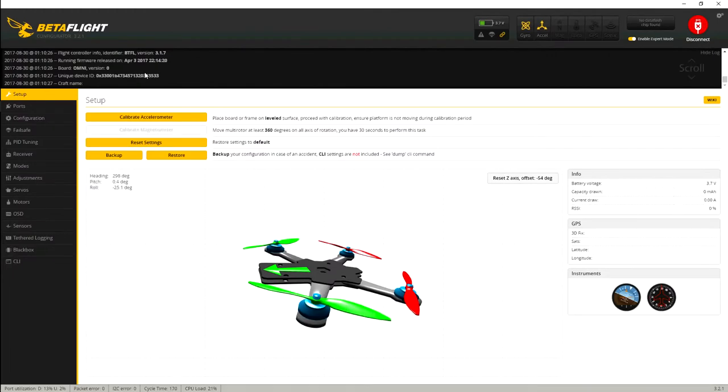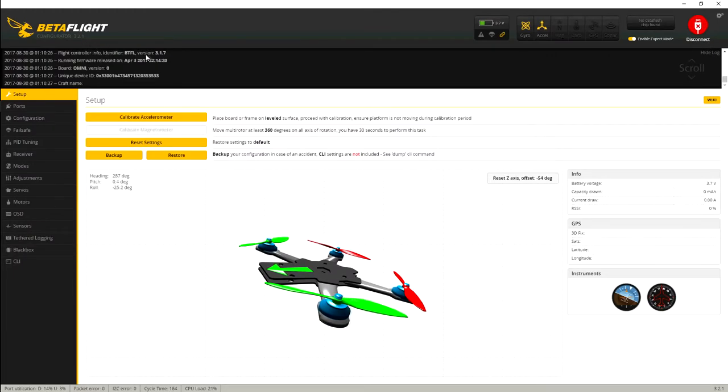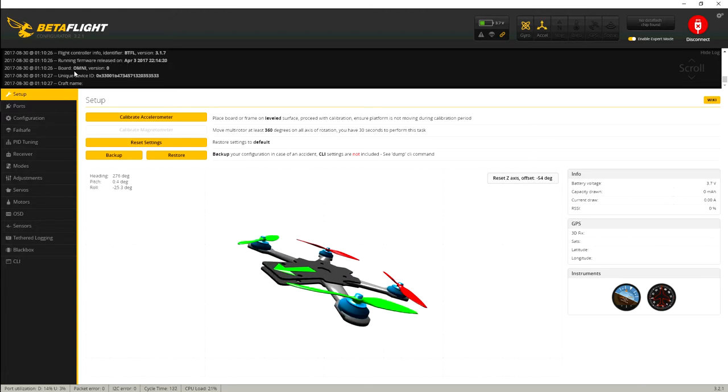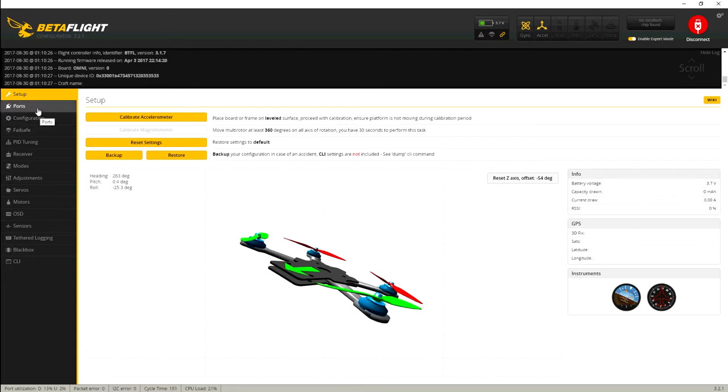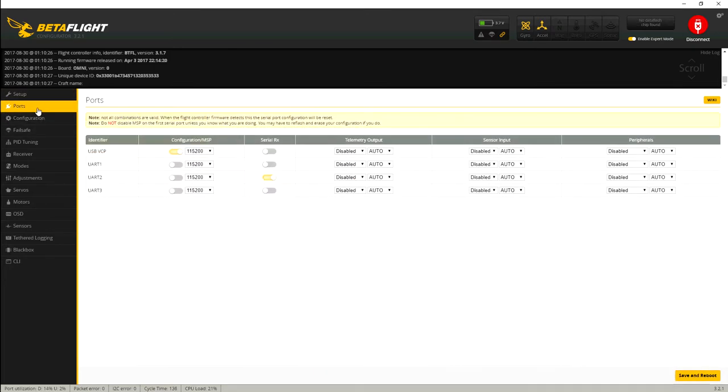All right, so here's connected to configurator 3.2.1. It comes loaded with Betaflight 3.17 and the target is Omnibus. So these are my configurations, how I got it to work. I set the UART 2 to Serial RX. That's where the receiver is connected.